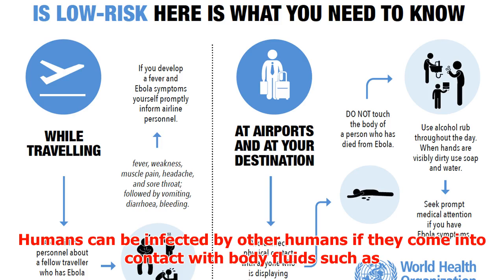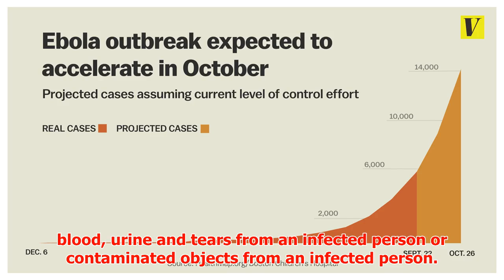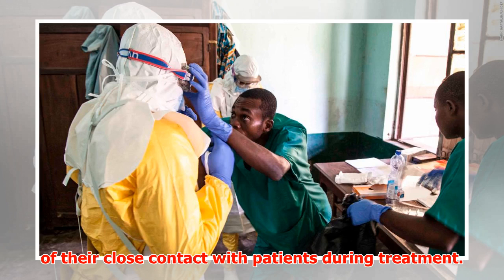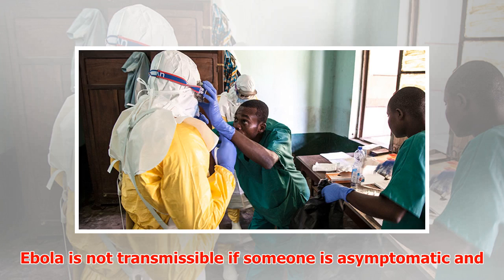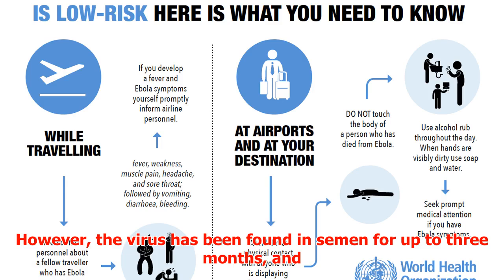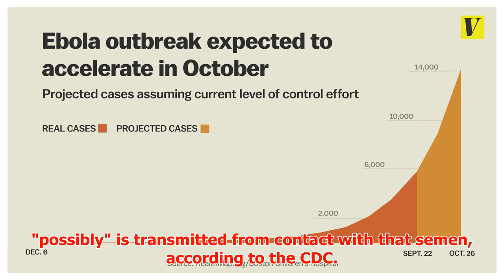Humans can be infected by other humans if they come into contact with body fluids such as blood, urine, and tears from an infected person, or contaminated objects from an infected person. Unprotected healthcare workers are susceptible to infection because of their close contact with patients during treatment. Ebola is not transmissible if someone is asymptomatic and usually not after someone has recovered from it.